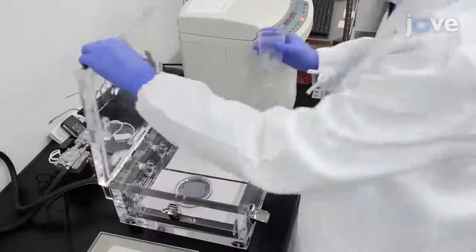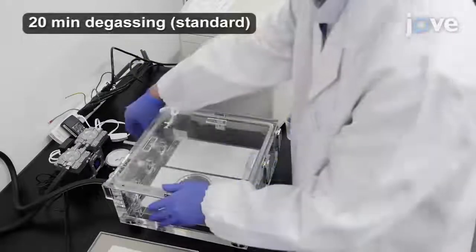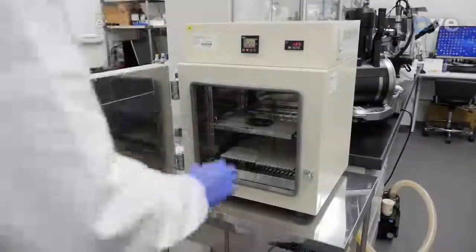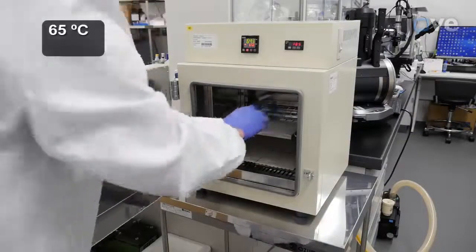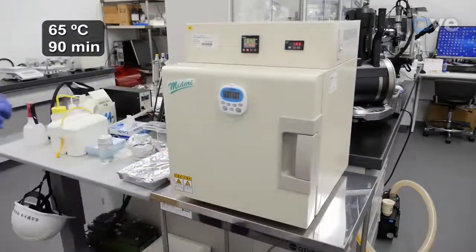Then degas the mold for 20 minutes in a vacuum chamber. Next, cure the mold at 65 degrees Celsius for 90 minutes.